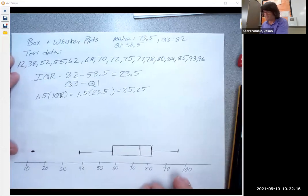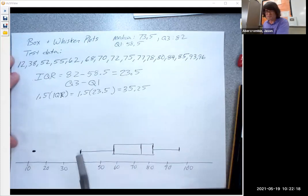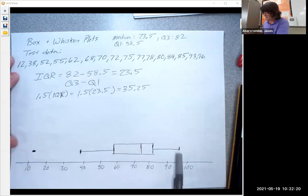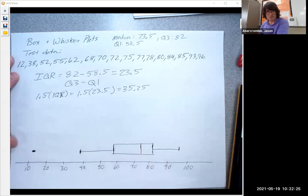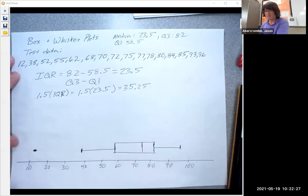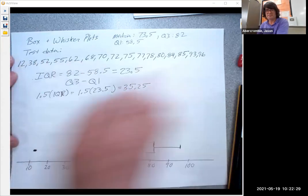So that's my box and whisker plot. Outlier, lowest non-outlier, highest non-outlier, Q1, Q3, and the median. Hope that helps you out. It's very simple. It's just a diagram to express a set of data.